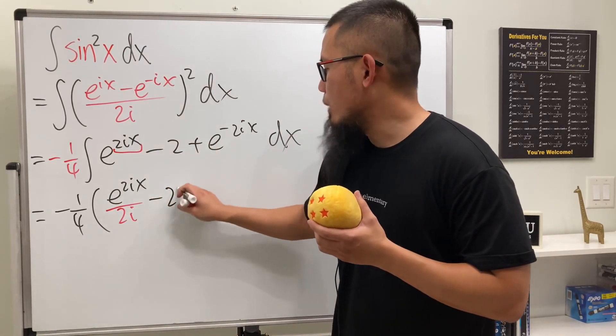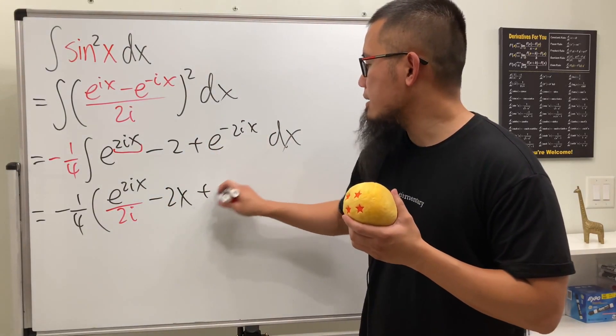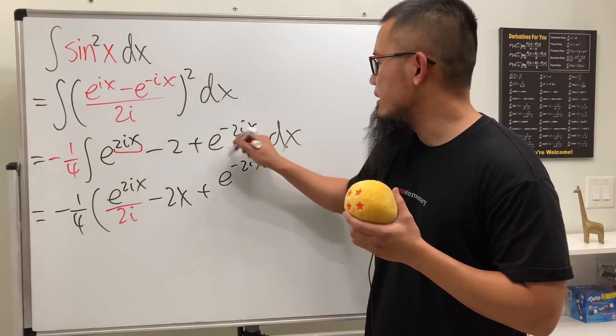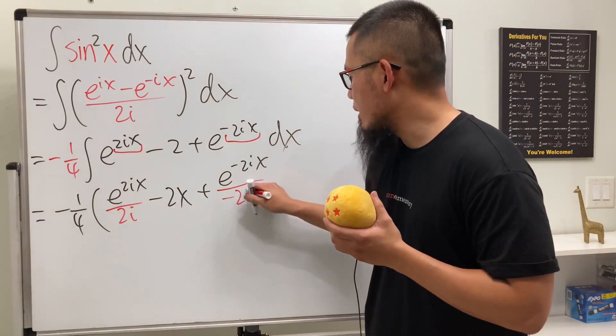And then this right here is going to be 2x right here, and then we will have plus e to the negative 2ix and then divided by negative 2i. So let's go ahead and write that down right here.